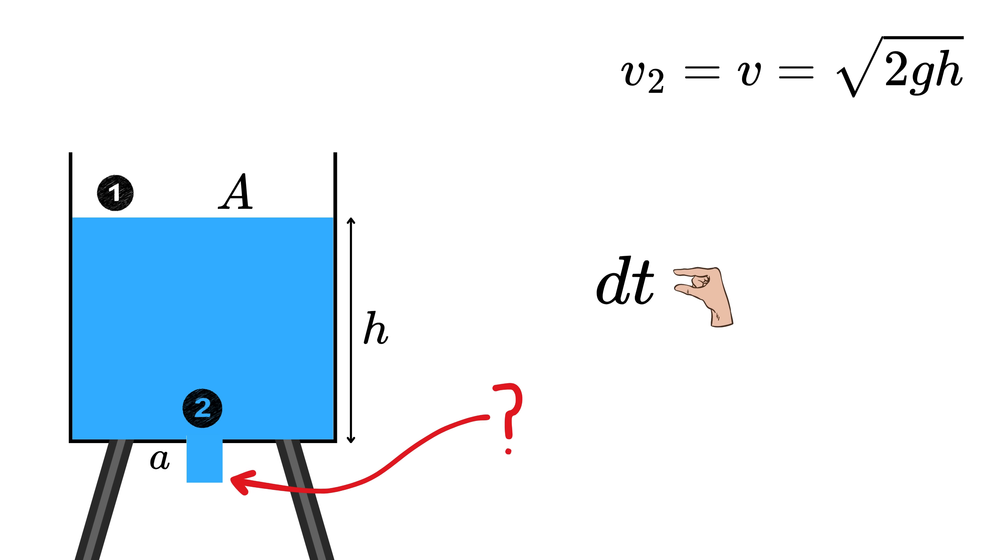If this time interval is so small, the speed of water coming out of the hole doesn't really change during that moment. We can assume it stays constant. In that short time, the water travels a distance equal to V times dt, because distance equals speed times time. Imagine a thin column of water shaped like a cylinder with height V times dt and base area equal to the hole area, small a. The volume of this water column, dV, is simply area times height.